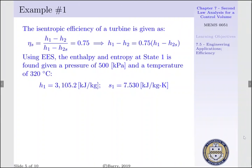Now, using EES, we're going to determine the enthalpy and entropy at state 1 using a pressure of 500 kPa and a temperature of 320 degrees Celsius. Our enthalpy at state 1, i.e., the inlet of our turbine, is 3,105.2 kJ per kg. Our entropy at state 1 is 7.530 kJ per kg-K.